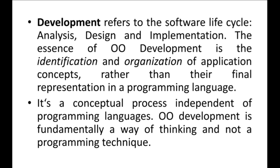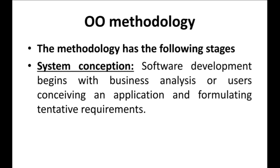What are the steps in development of software using an object-oriented approach? The first step is system conception. Software development begins with business analysis, conceiving an application and formulating tentative requirements. In simple words, system conception means I need to collect the requirements of my software — what are the tasks that a software should do. For example, if I am developing a railway ticket reservation system, requirements include creating a customer account, booking a ticket, canceling a ticket, and so on.